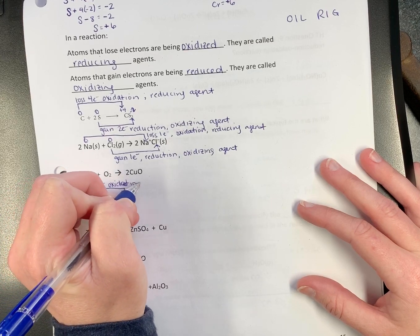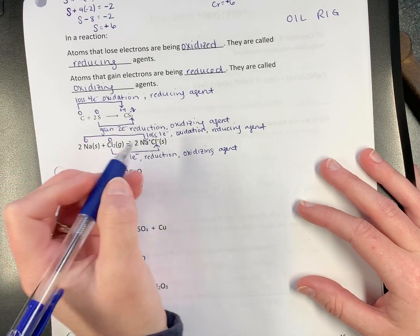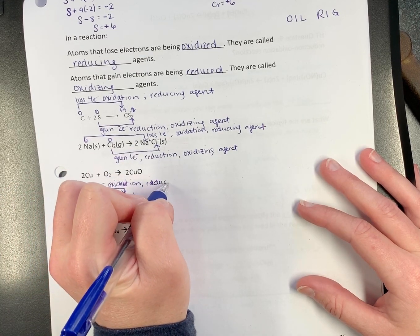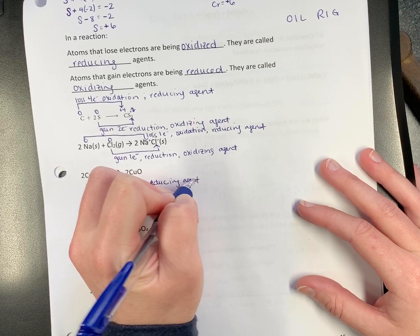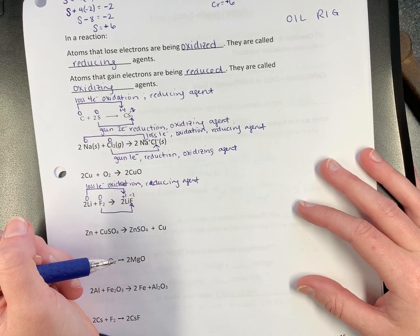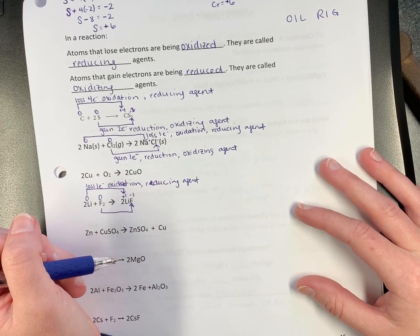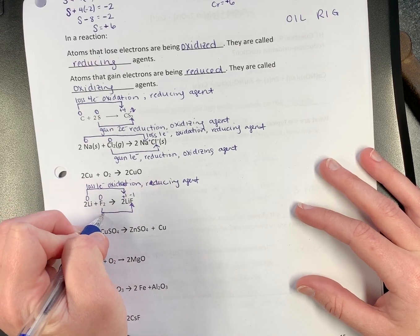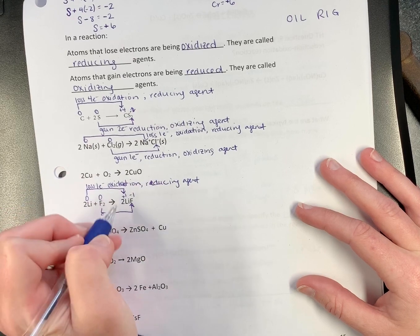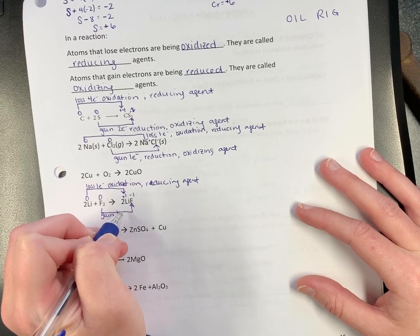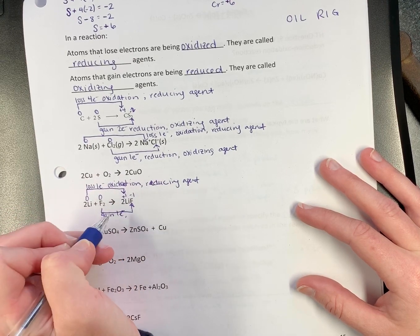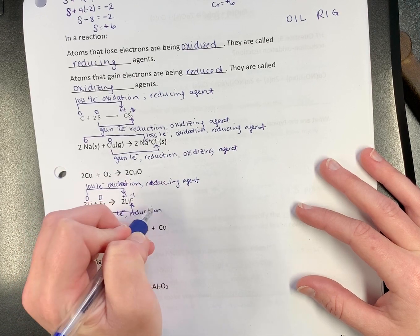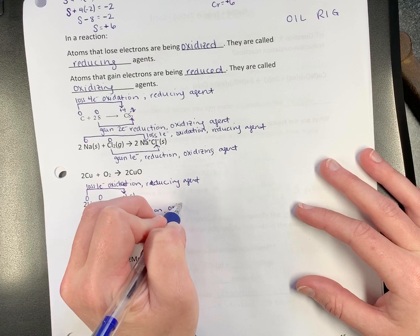If it's oxidation, what agent is it? The reducing agent. Fluorine goes from zero to minus one. What's it doing? Gaining. Gaining one electron. When it gains, we call that reduction. So what kind of agent is it? Oxidizing.